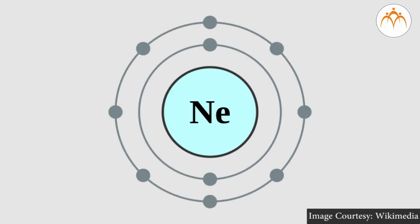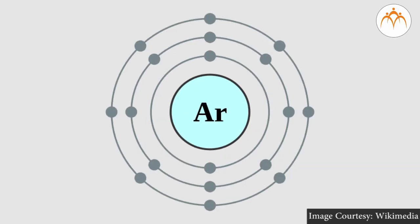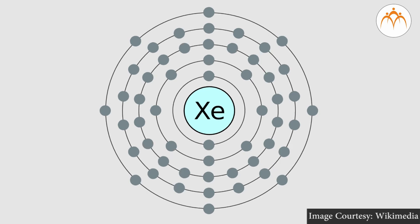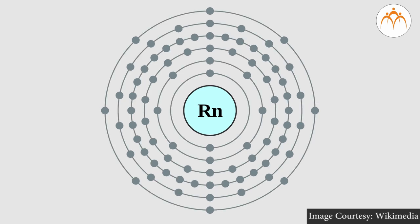Hence, these elements are chemically inactive and have zero valency. We call the elements helium, neon, argon, krypton, xenon, and radon inert elements. Let us see how valency is related to electronic configuration.